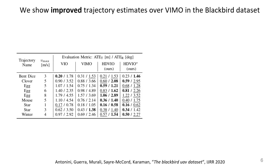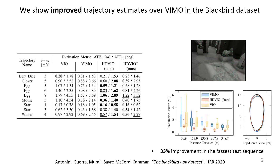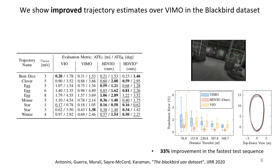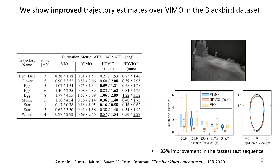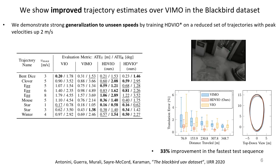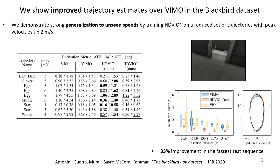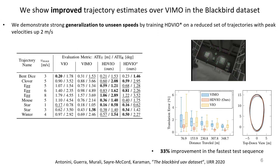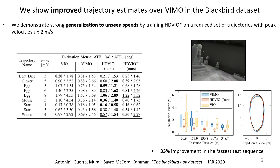In terms of trajectory estimation, HD-VIO outperforms the VIO and VIMO baselines on the Blackboard dataset. The largest improvements are in the fastest trajectories, where fast camera motion and rapid IMU changes make the tracking of visual features hard. We also demonstrate strong generalization to unseen speeds, by training our method with a reduced training set containing trajectories with peak speed up to 2 m/s.